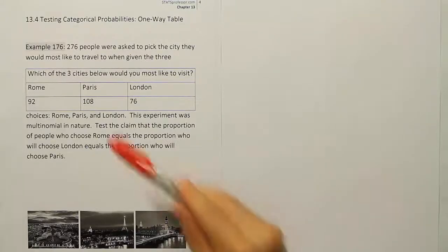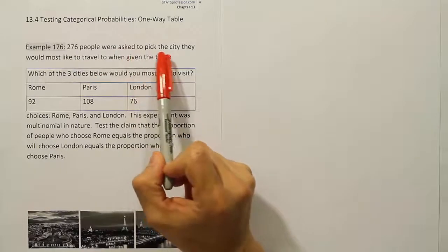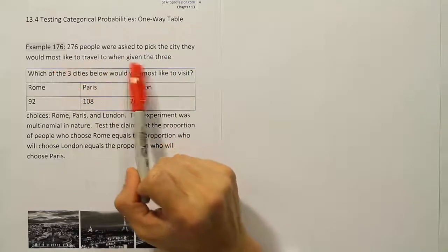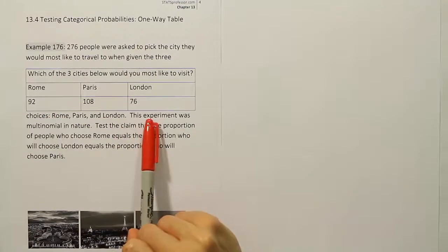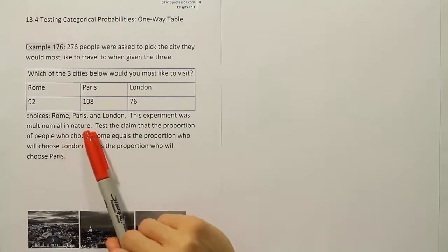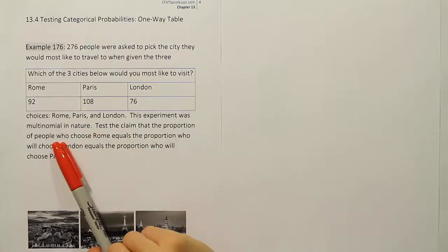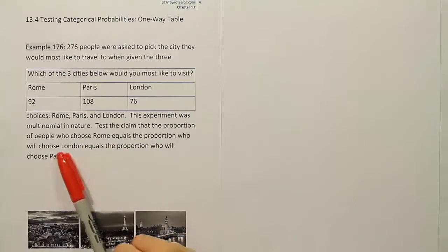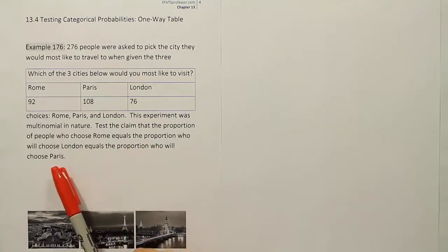Example 176. 276 people were asked to pick the city they would most like to travel to when given three choices: Rome, Paris, and London. This experiment was multinomial in nature. Test the claim that the proportion of people who choose Rome equals the proportion who will choose London equals the proportion who will choose Paris.